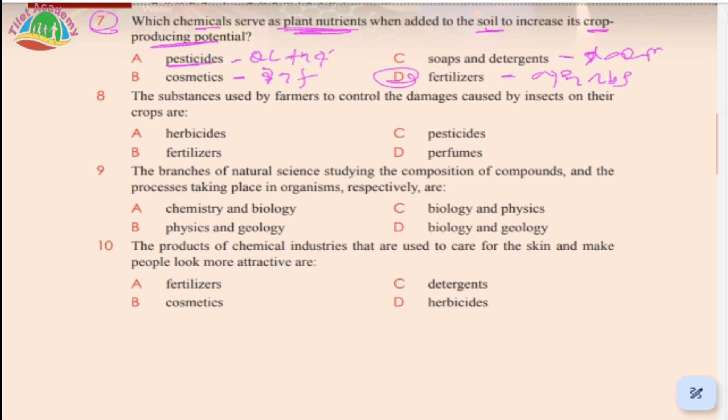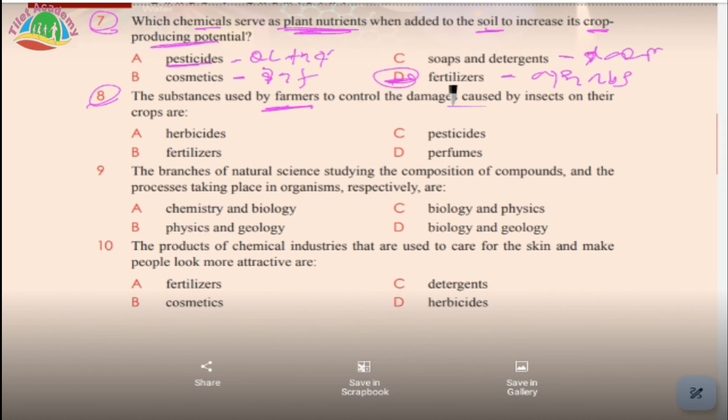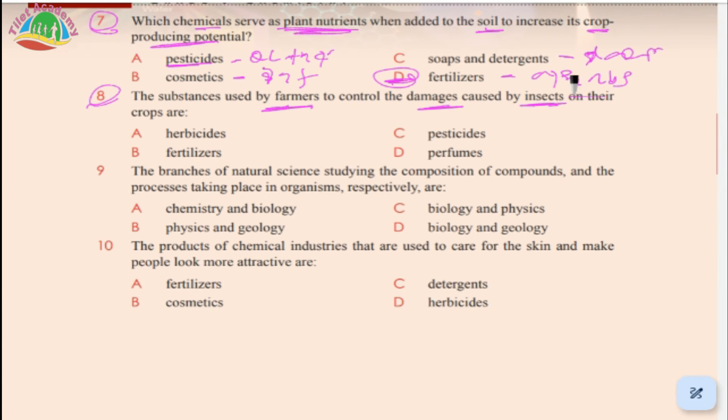The substances used by farmers to control damages caused by insects on their crops: A. herbicides, B. fertilizers, C. pesticides, D. perfumes. Herbicides are for plants, fertilizers are for nutrients. The answer is C, pesticides, for controlling insects.